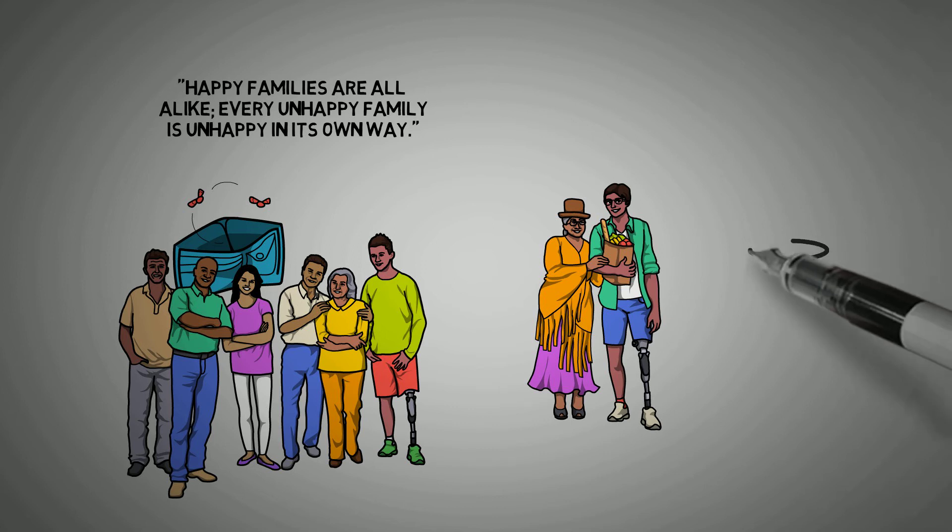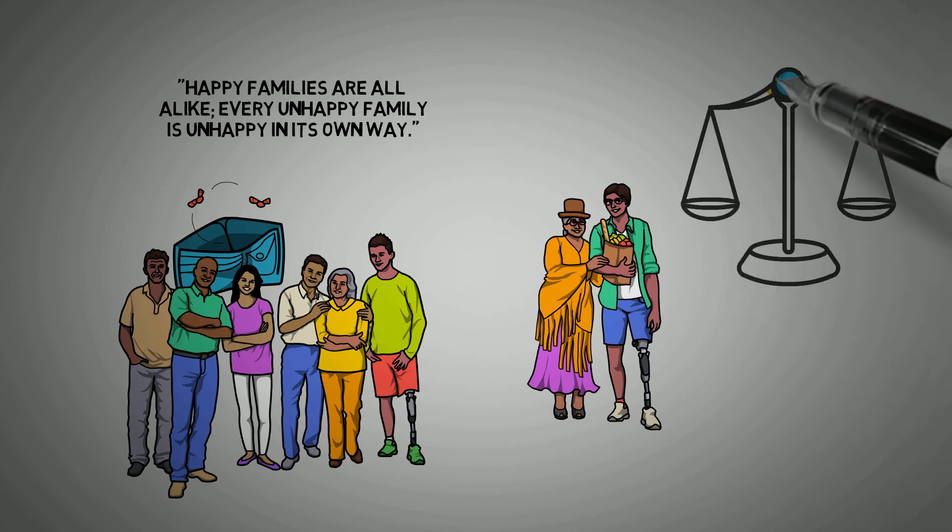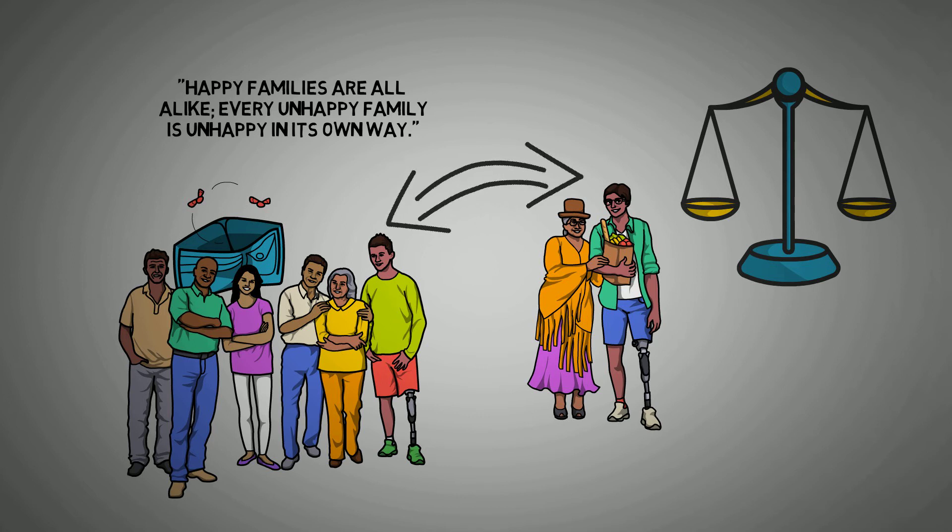To be happy, however, you need some degree of success in each major area. Thus all happy families are alike because they all have a similar structure. Disorder can occur in many ways, but order in only a few.